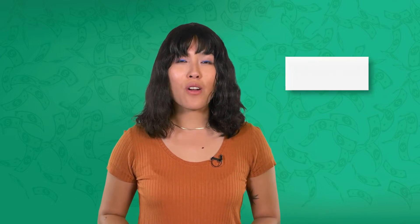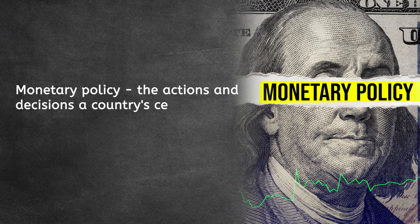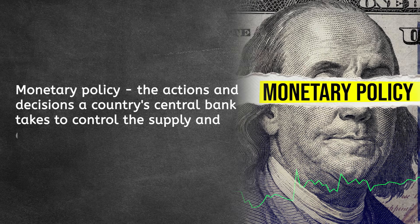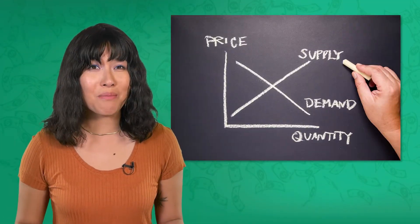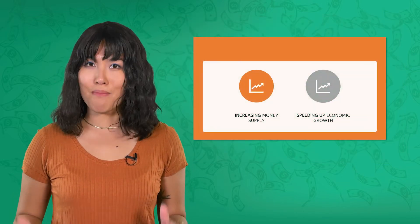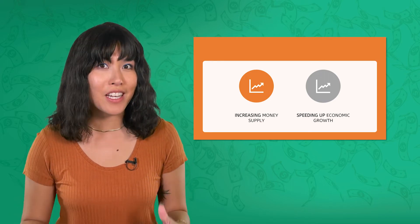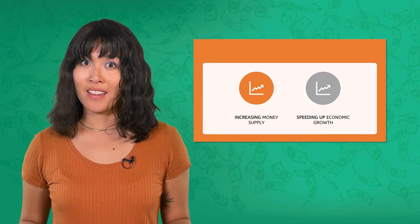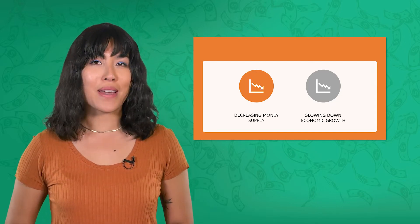So the Fed can choose to speed up or slow down the economy — but how? They do this by using something called monetary policy. Monetary policy is the actions and decisions a country's central bank takes to control the supply and demand of money and credit. By increasing the money supply, the Federal Reserve can try to stimulate economic activity and speed up growth. On the flip side, by decreasing the money supply, the Federal Reserve aims to slow down economic activity.